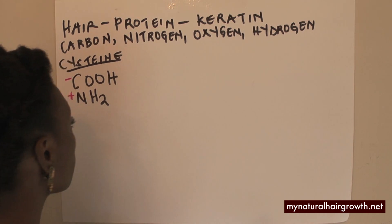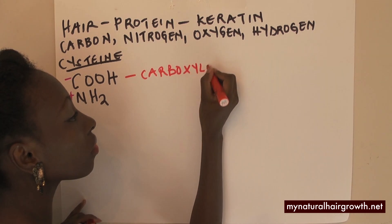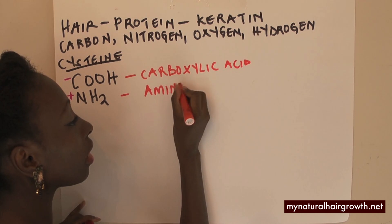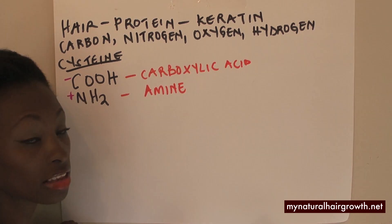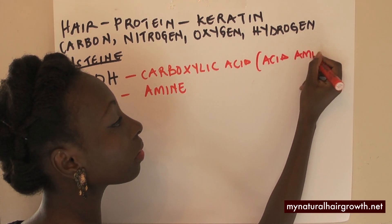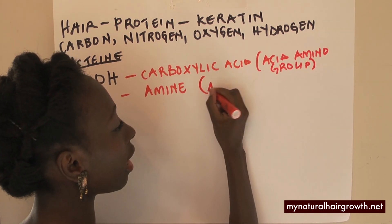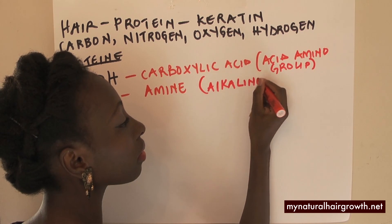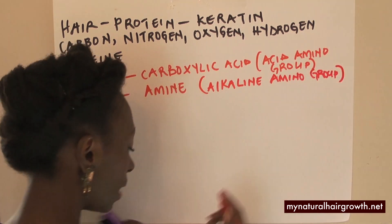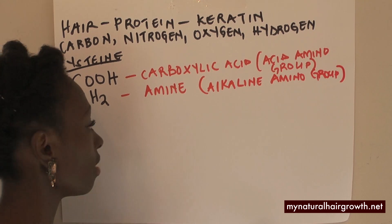Now the names for these are carboxylic acid and amine. The difference is really that one is positively charged and the other one is negatively charged — this is an acidic amino group while this is an alkaline amino group. But how does it really look if you were to make a representation of how this bond occurs? It would look like this.